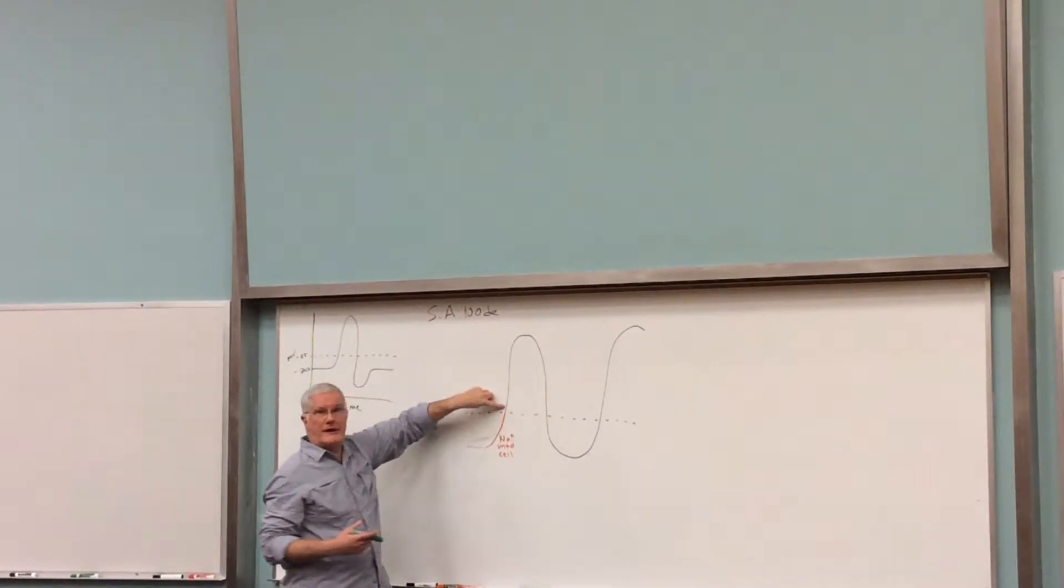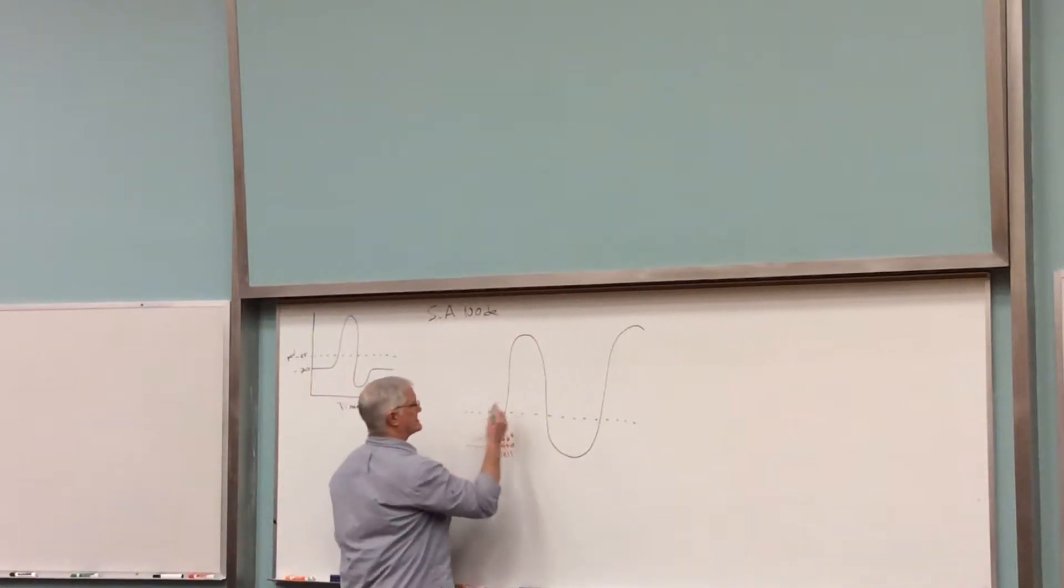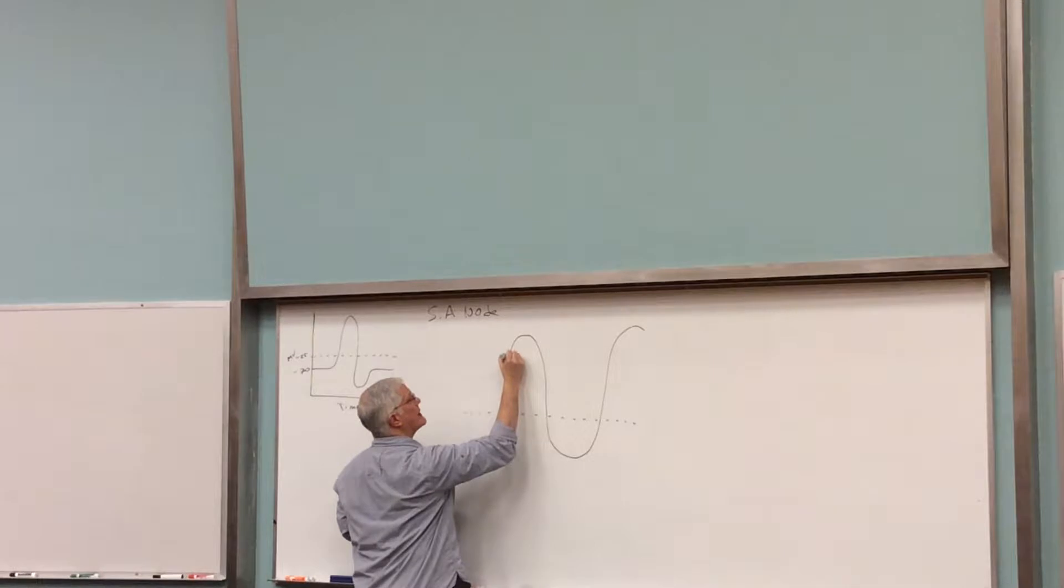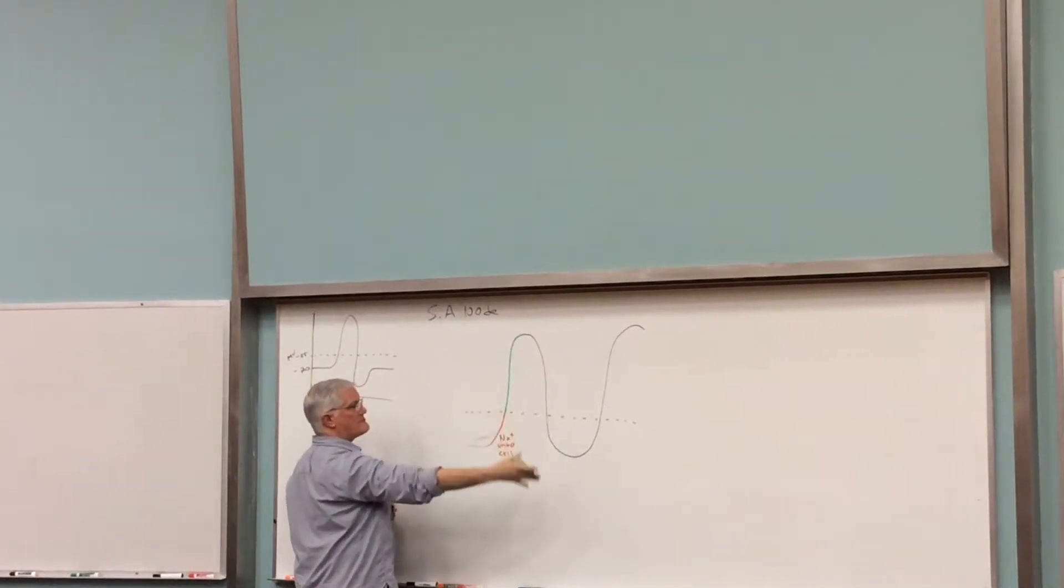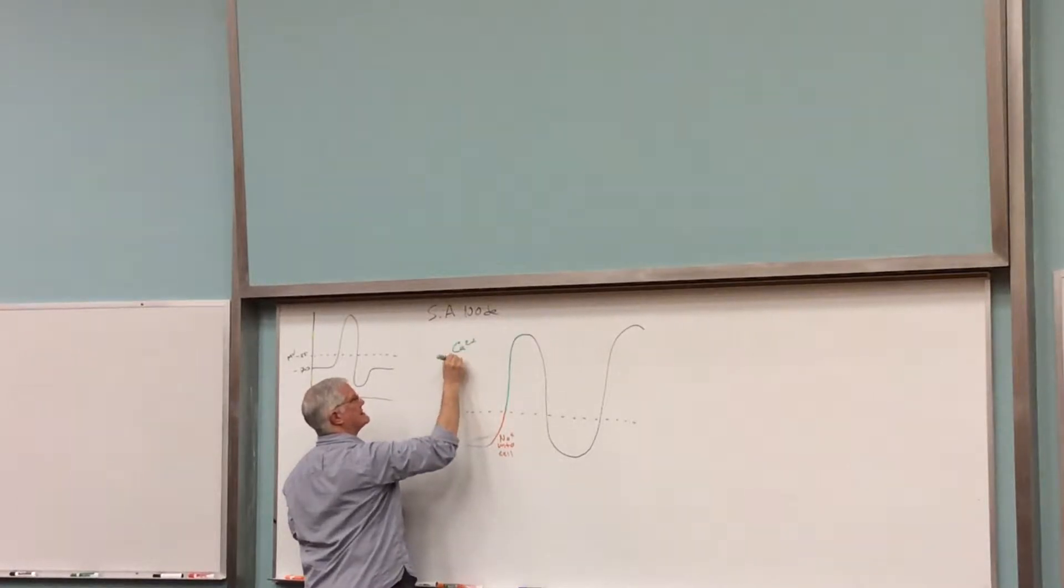Now we're not using sodium after the dotted line. Here's the new ions: calcium ions. That's why I'm changing the color to represent a change in ion that's responsible for that behavior of our membrane potential. This is due to calcium entering the cell.